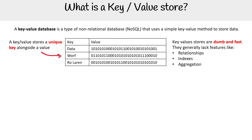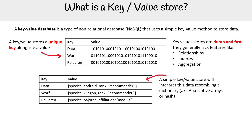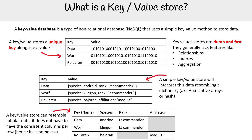A key value store is a unique key alongside a value. A simple key value store will interpret this data resembling something that looks like a dictionary — an associative array or a hash. When we look at it like a table, it can resemble tabular data, but it does not have consistent columns per row. Hence, it's called schema-less because it doesn't follow a particular schema.